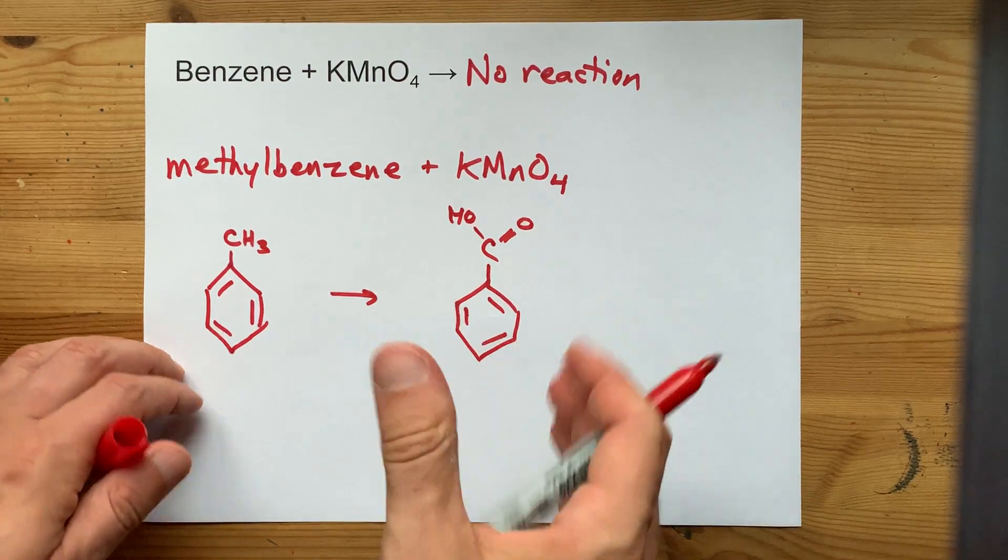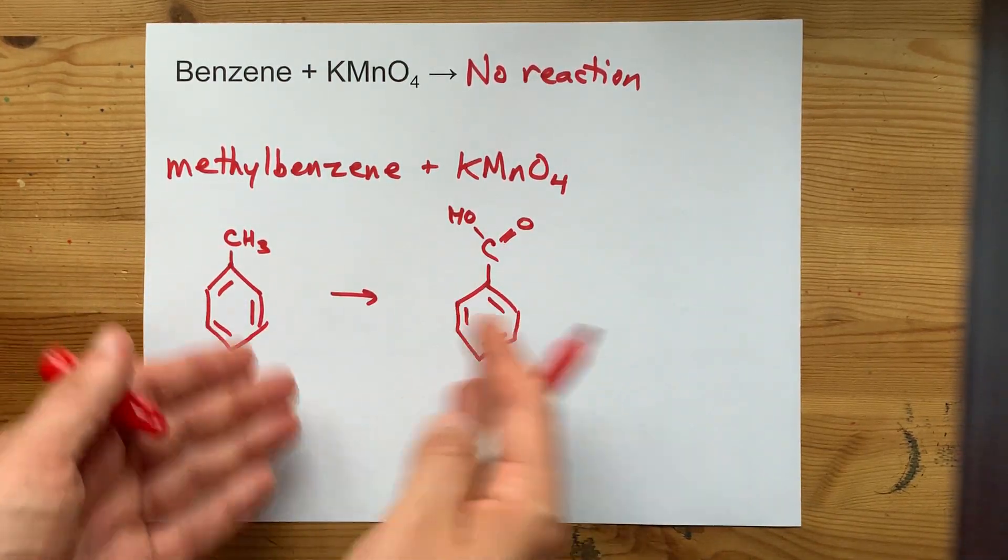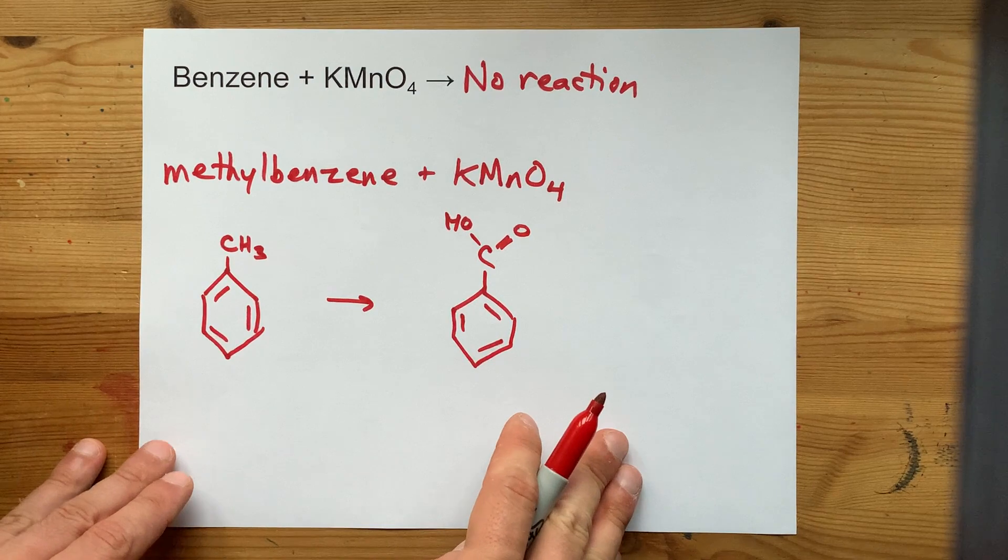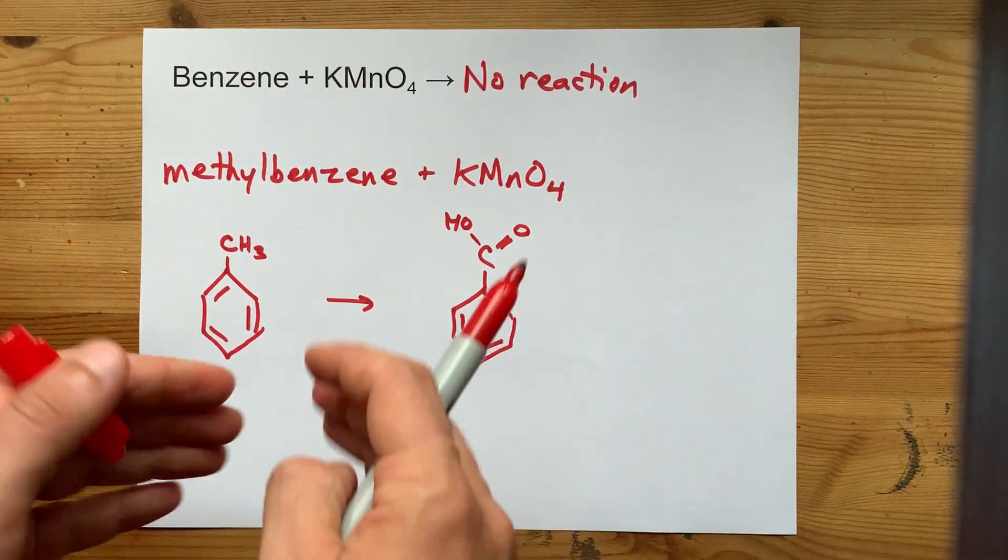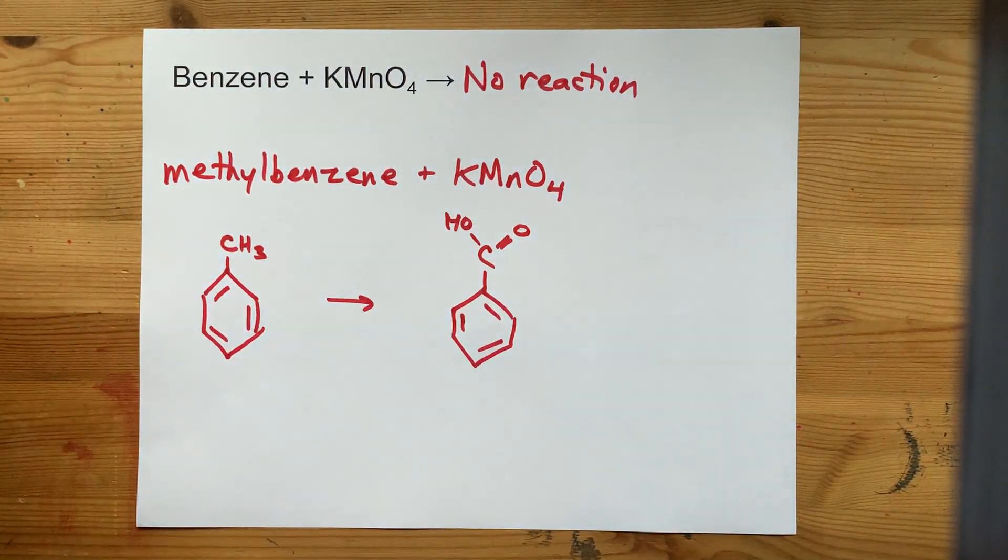What I'm trying to get at here is that it's not the benzene at all that's getting oxidized by KMnO4. It's things that are attached to the benzene ring that can maybe get oxidized by it.